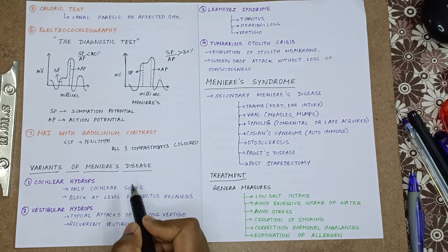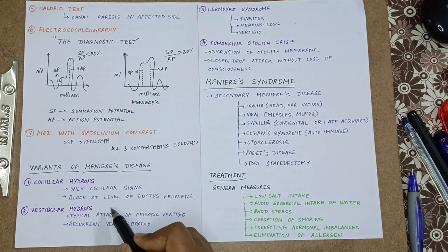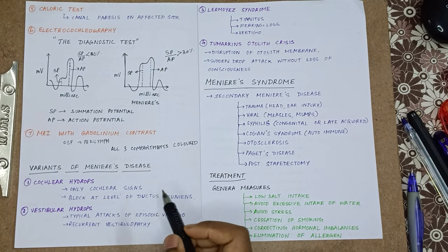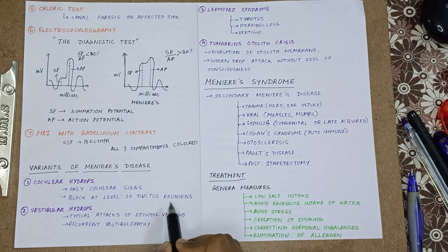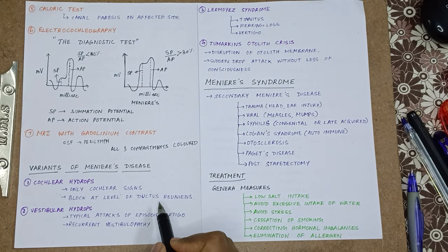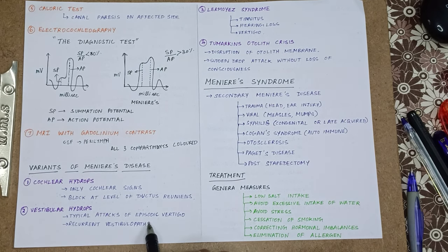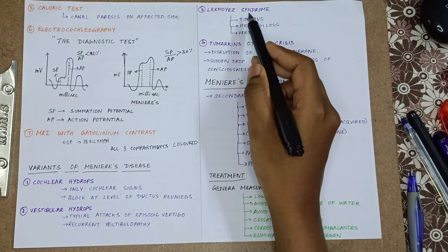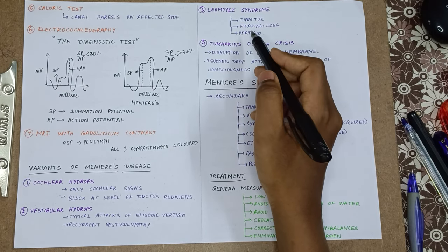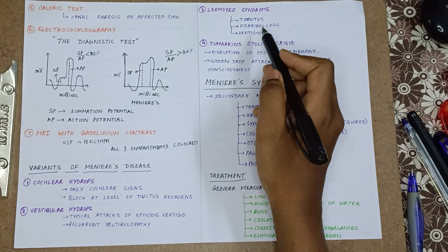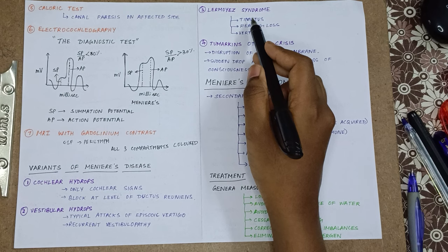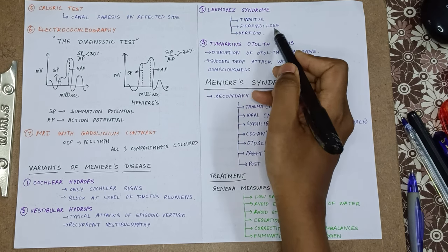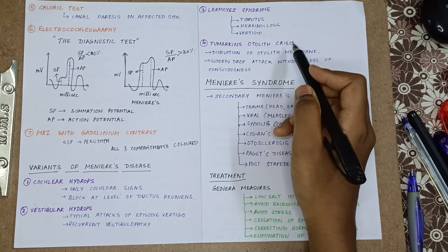Discussing variants of Meniere's disease: cochlear hydrops, where only cochlear signs are seen — there may be a block at the level of ductus reuniens where the base of the cochlea and the saccule are connected. Vestibular hydrops, where only vestibular functions are affected with episodic vertigo, is called recurrent vestibulopathy. The third variant is Lermoyez syndrome — in regular Meniere's there is vertigo, hearing loss, and tinnitus, but in Lermoyez syndrome it is the reverse: tinnitus, then hearing loss, then vertigo.